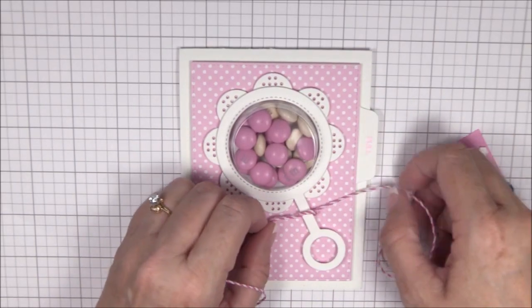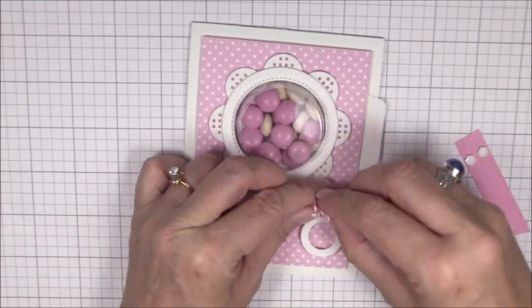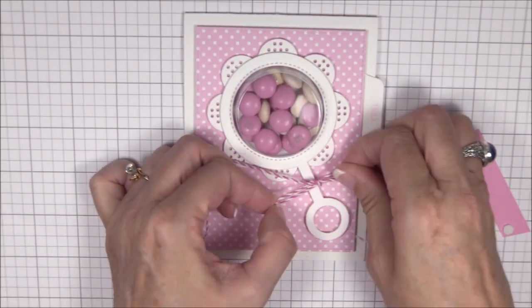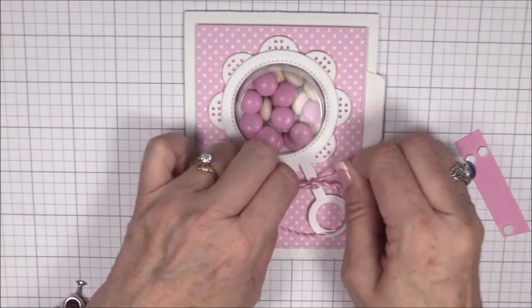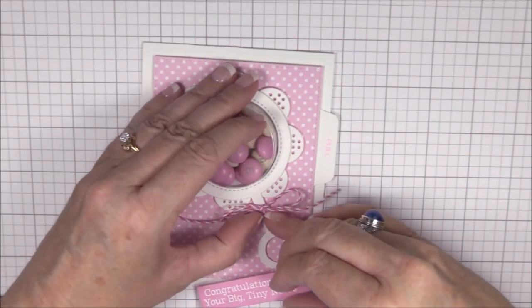To add some fun detail, I'm tying some baker's twine into a bow around the handle of the baby rattle. And then I'll add my sentiment strip to the bottom left with some thin 3D foam squares. And that's it!